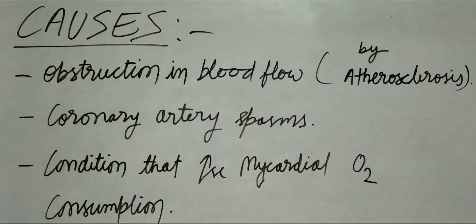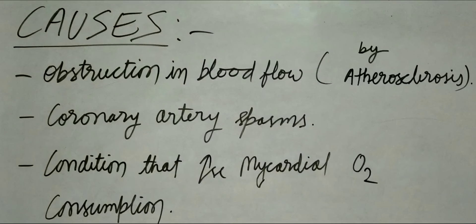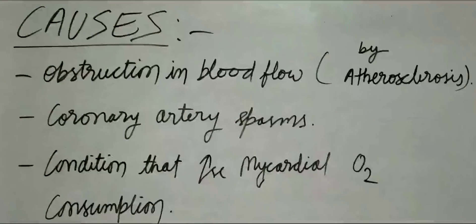Causes of Angina Pectoris: The first cause is obstruction of coronary blood flow due to atherosclerosis. Atherosclerosis is a condition in which buildup of fats, cholesterol, and other substances in and on the artery walls occurs. Due to this buildup, narrowing of the arteries occurs and blood flow is reduced.